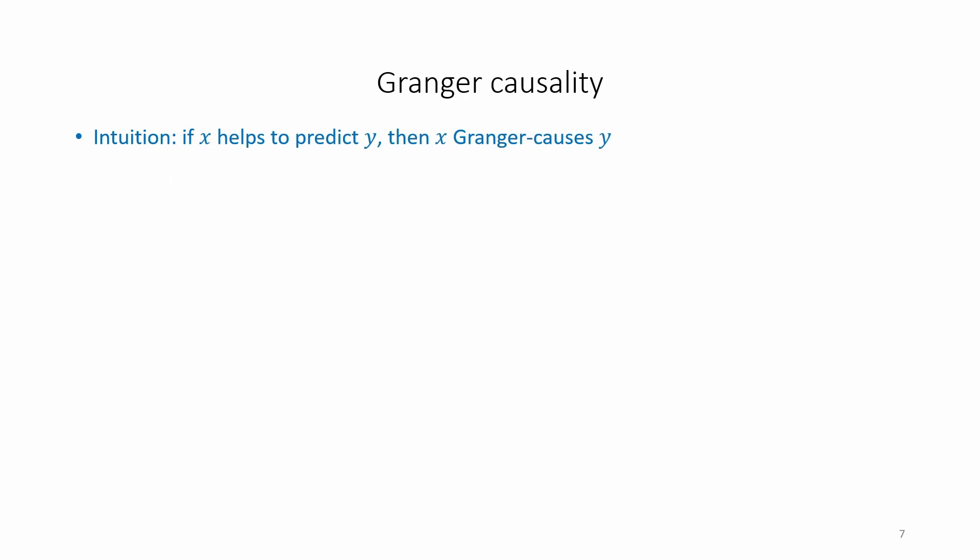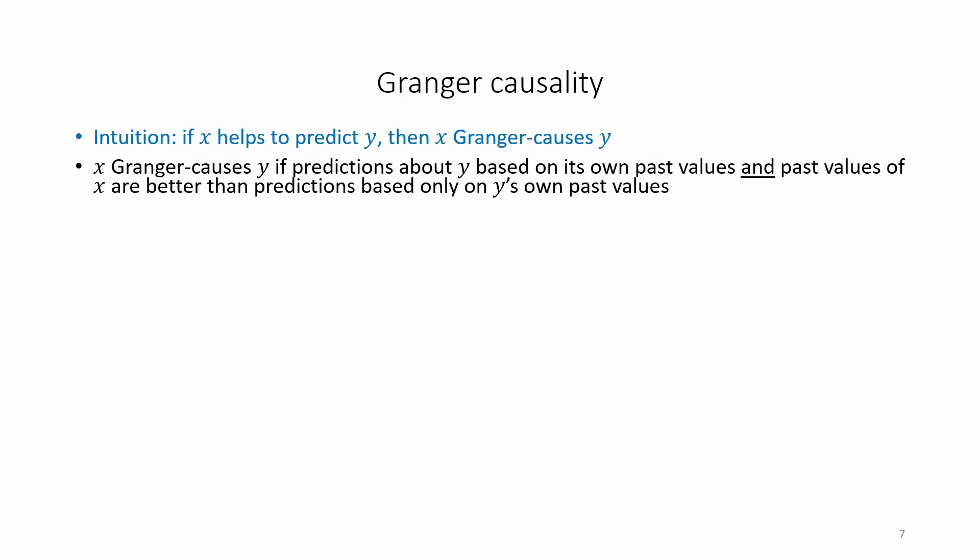The basic intuition of Granger causality, therefore, is that if x helps to predict y, then x is said to Granger cause y. x Granger causes y if predictions about y based on past values of y, as well as past values of x, are better than predictions based only on past values of y. Lagged values of x provide statistically significant information,